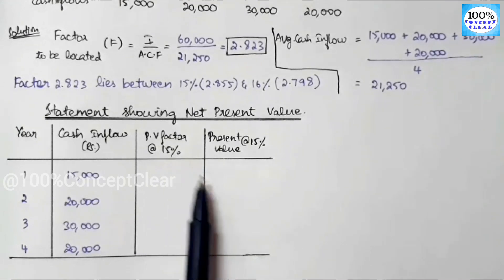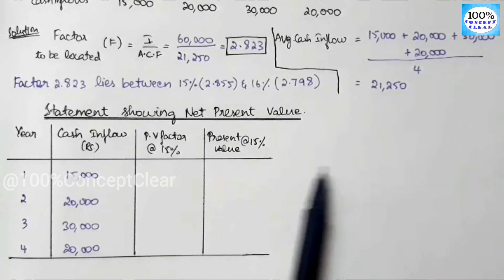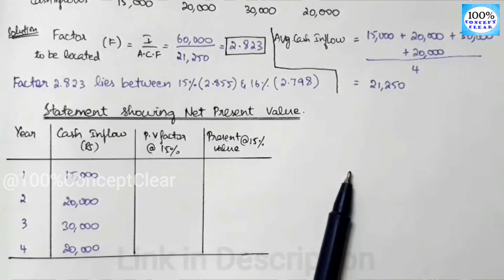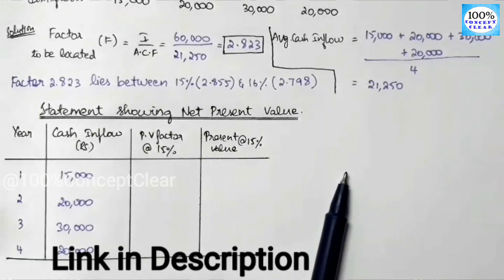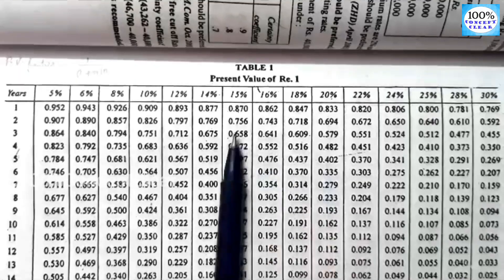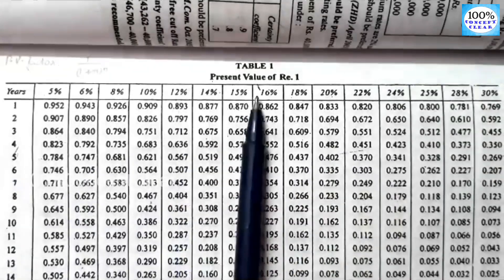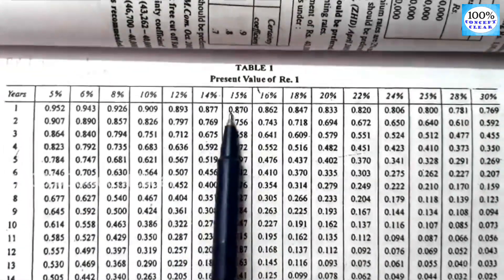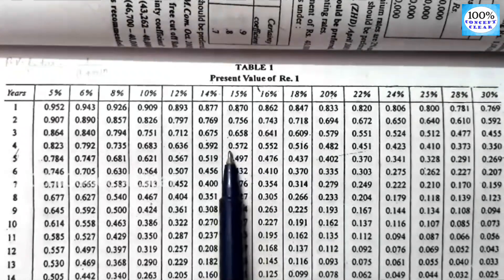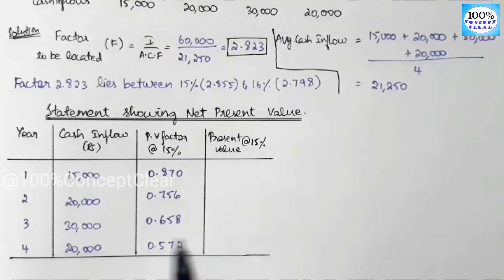Next, we need the PV factor at 15%. We look at Table 1 for the PV factor year by year. At 15%: Year 1 is 0.870, Year 2 is 0.756, Year 3 is 0.658, and Year 4 is 0.572.